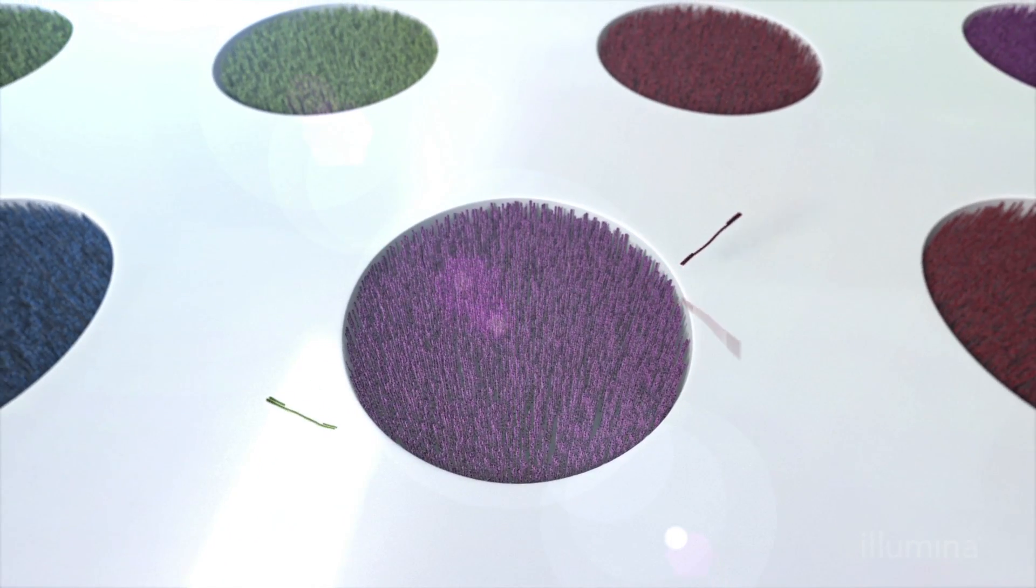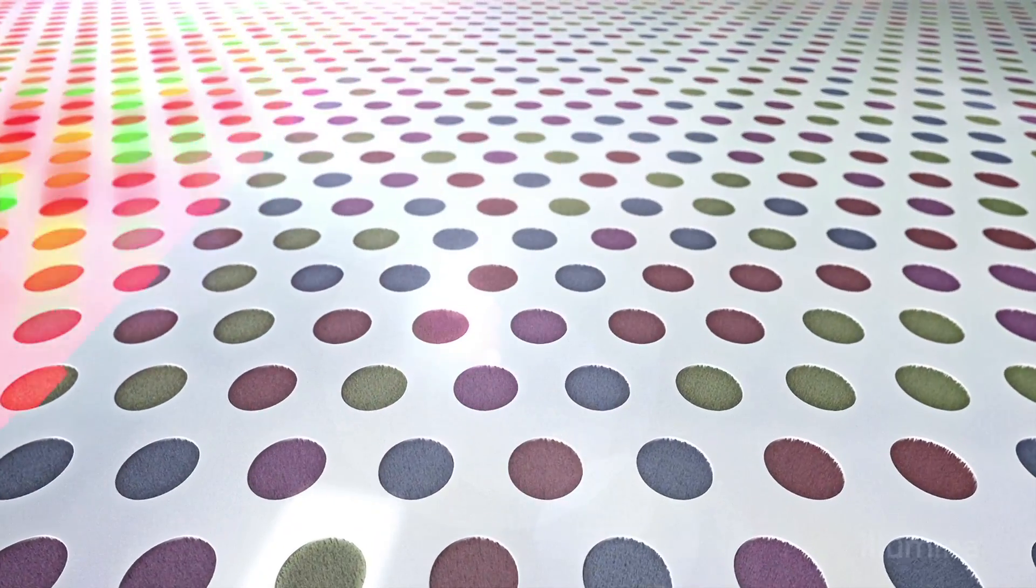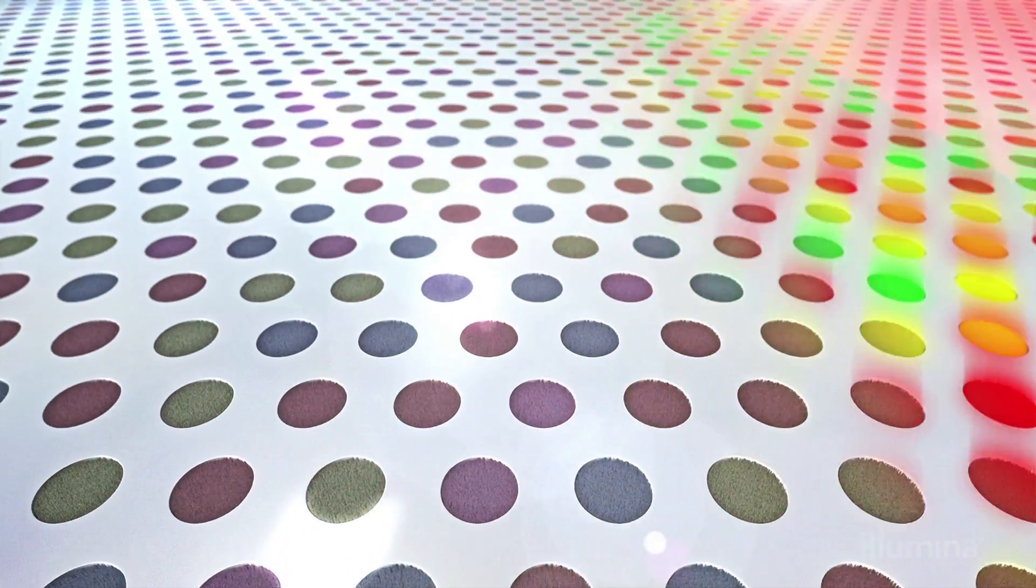This results in a high percentage of wells that are occupied by clusters originating from a single template. Once the exclusion amplification cluster generation process is complete, the flow cell is ready for sequencing.